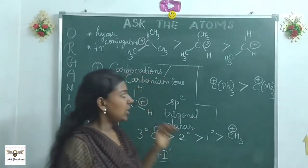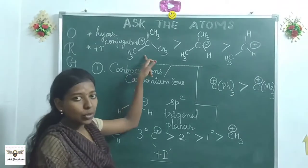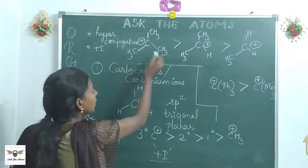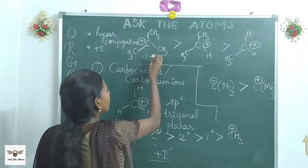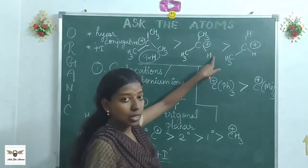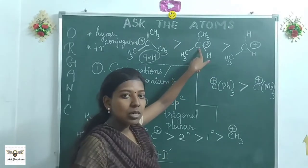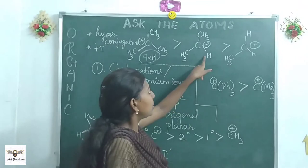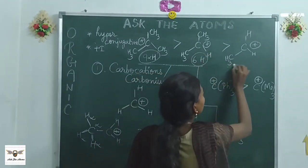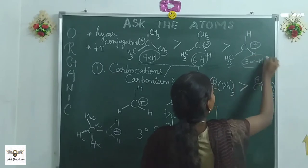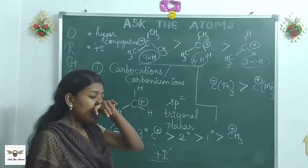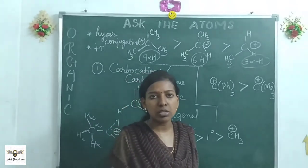Looking at the structures: a tertiary carbocation has three alpha carbons, each with three alpha hydrogens, giving nine alpha hydrogens total. In the secondary case, two alpha carbons each contribute three, giving six alpha hydrogens. In the primary case, there are only three alpha hydrogens. The hydrogen directly attached to the carbocation carbon should not be counted as an alpha hydrogen. So tertiary is most stable, then secondary, then primary.